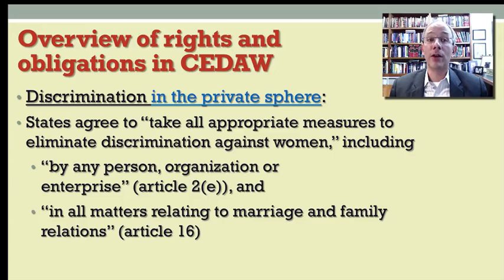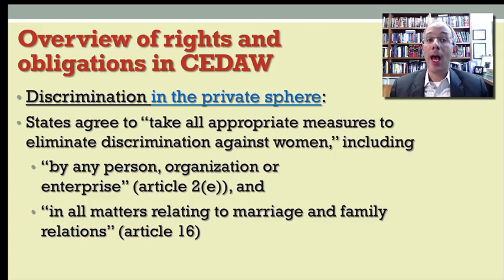Now, some examples of discrimination in the private sphere. Here again, the obligation runs to the states parties who agree to take these particular measures. But the measures are to eliminate discrimination against women by, as you can see from Article IIe, any person, organization, or enterprise — that would include private persons, organizations, or businesses, as well as in all matters relating to marriage and family relations.